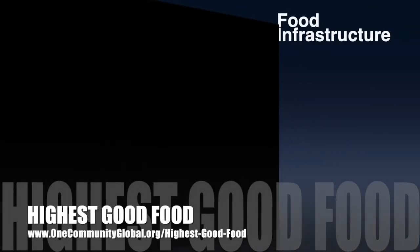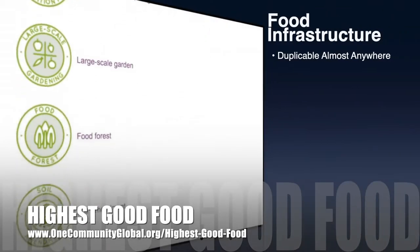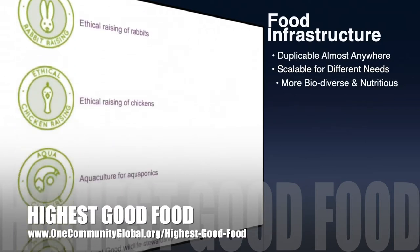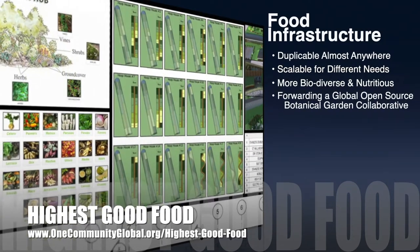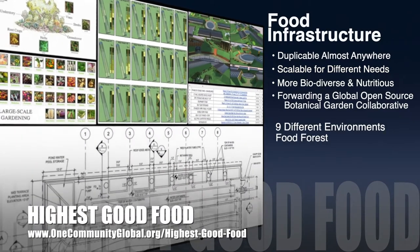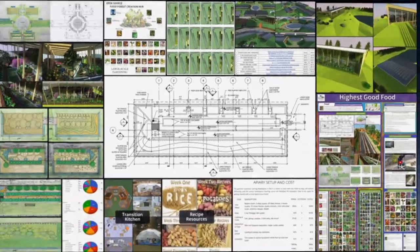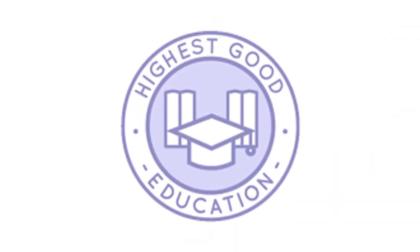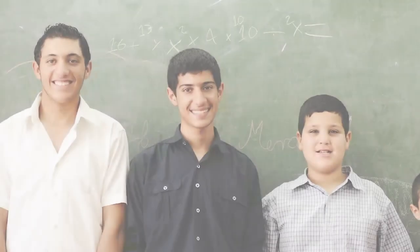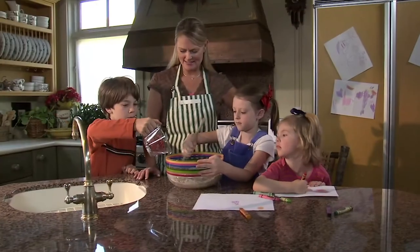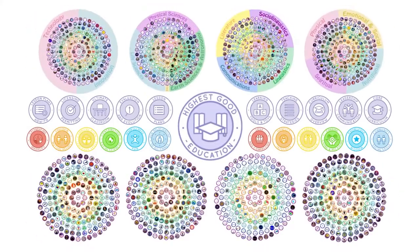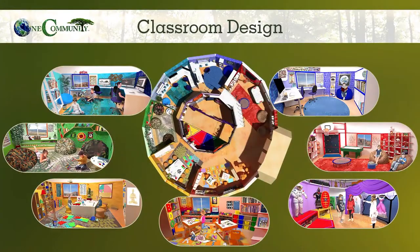One Community's approach to highest good food is duplicable almost anywhere, scalable for different needs, more biodiverse and nutritious, part of forwarding a global open-source botanical garden collaborative, and includes nine different free shared and duplicable growing environments. The next component is highest good education — this component is complete and pretty much ready to launch once we're on the property. It is designed for all age groups, adaptable to any schooling environment, inspiring and fun for all participants, and includes national standards, all subjects, lesson plans, teaching strategies, learning strategies and tools, classroom design, and more.